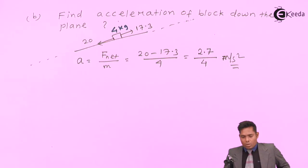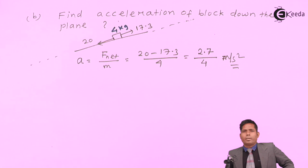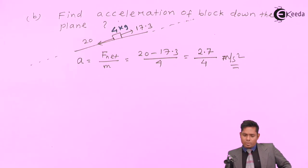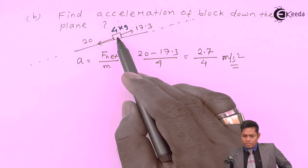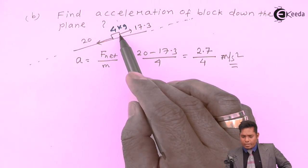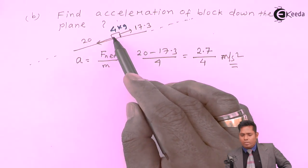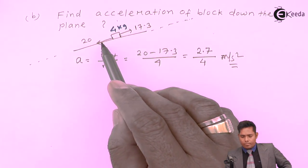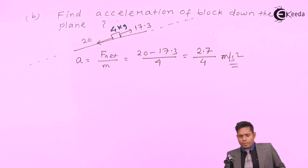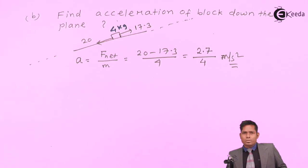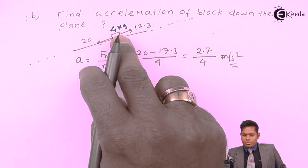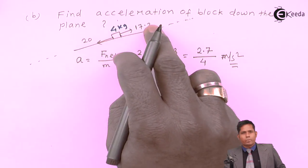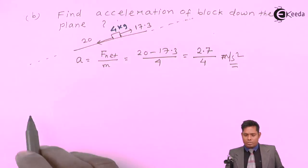Now, if I say how much extra force is needed to prevent the block from sliding down, then obviously the answer is 2.7 Newtons. Because if I apply 2.7 N in the upward direction along the plane, there will be no motion of this block. Now, another question: if I apply a force of 25 N in the upper direction, what will happen to the friction?